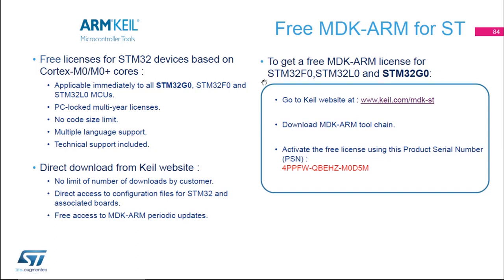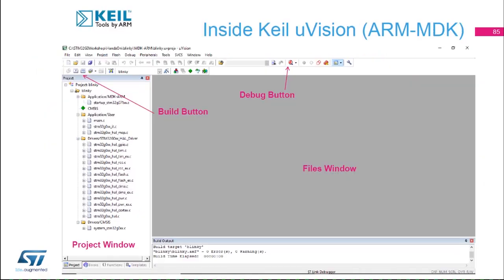To get Keil for free, go to keil.com/MDK-ST to download the MDK-ARM toolchain. Use the provided PSN to activate your free license. Inside Keil Microvision 5 — MDK-ARM — on the left side you will find the project window, and in the center the file window.